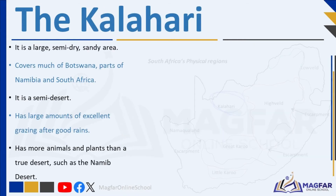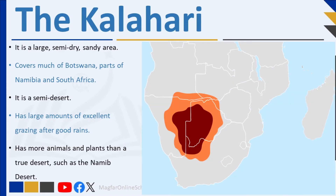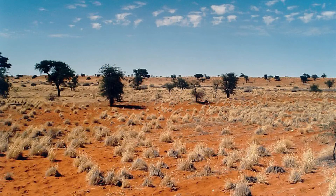The Kalahari is located in Botswana, Namibia, and South Africa. It is a large, semi-dry, sandy area, covering nearly 1 million square kilometers — much of Botswana and parts of Namibia and South Africa. It is a semi-desert with large amounts of excellent grazing after good rains. The Kalahari supports more animals and plants than a true desert such as the Namib Desert to the west.